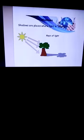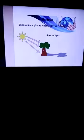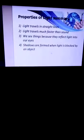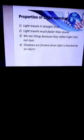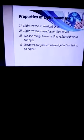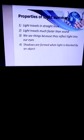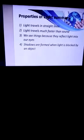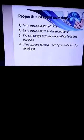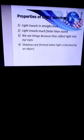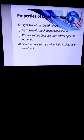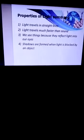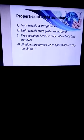Light travels much faster than sound. We see things because they reflect light into our eyes. Light travels in straight lines. Shadows are formed when light is blocked by an object. Hope you can understand different properties of light.